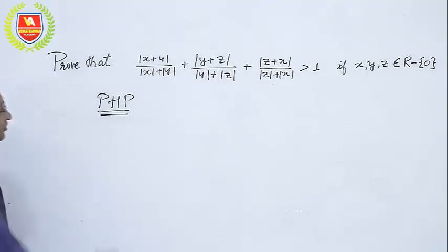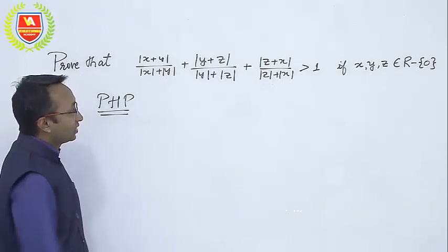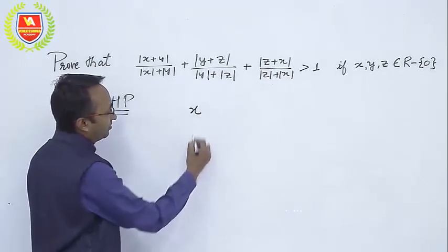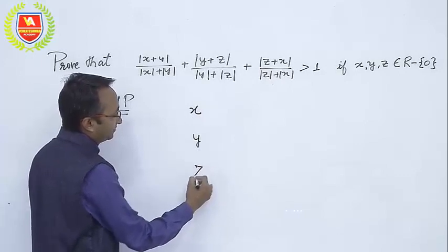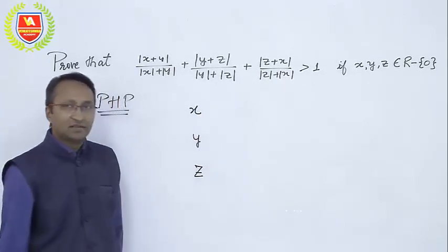We use the same concept here to solve this problem. What we understand here is that there are three real numbers x, y, z, and none of them is zero.